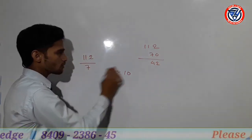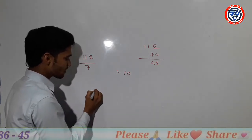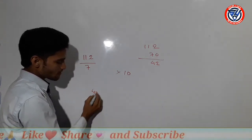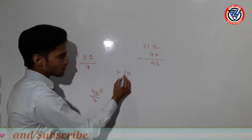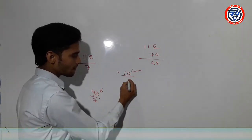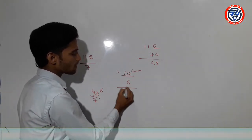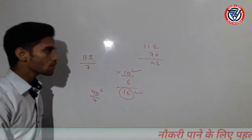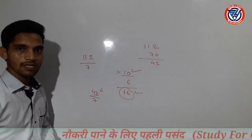Ab is 42 ko kya karenge? 7 se divide karenge. Is 42 mein bacha? 7 se — toh 7 ka 6 — 42. Toh pehle kitna main diya tha? 10 baar main. Phir kitna main? 6 main. Toh total mera divided ka answer kya hoga? 16. Chaliye doston, ek aur question lete hain. Theek hai? Toh main rough karta hoon.